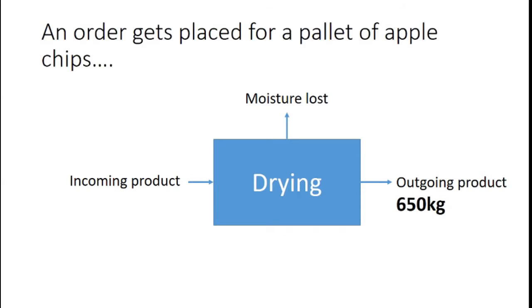Using those numbers, we can now make an estimate. Usually when an apple company is selling apple chips, they get an order for end product — say a pallet of apple chips. Let's say a pallet has 650 kilos of apple chips. We need to figure out how much incoming product we need to produce that outgoing product. Calculating moisture loss also becomes important later because we can make estimates on how much energy we need to process this product.